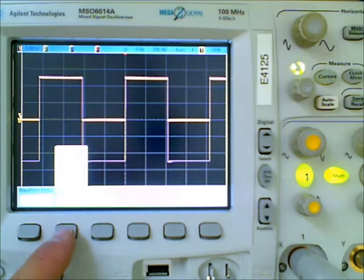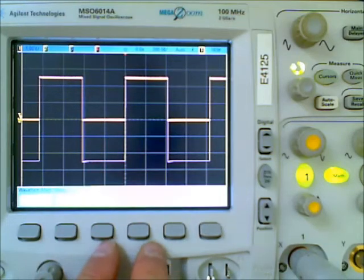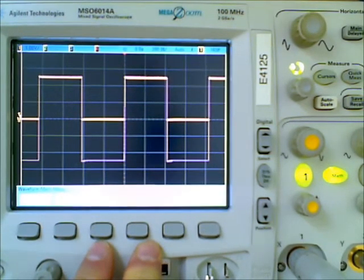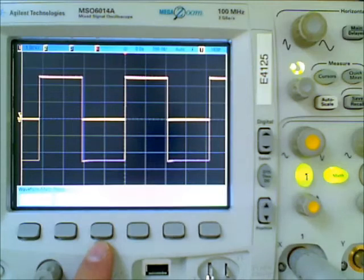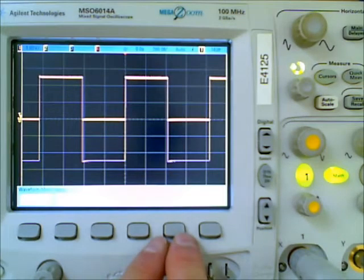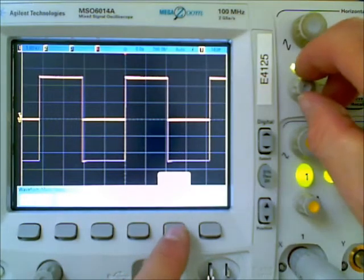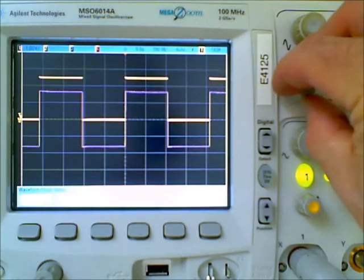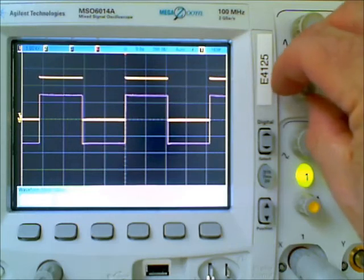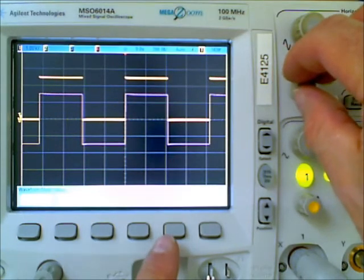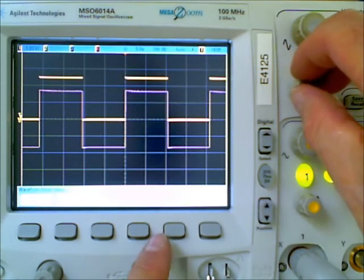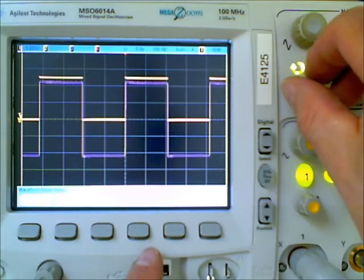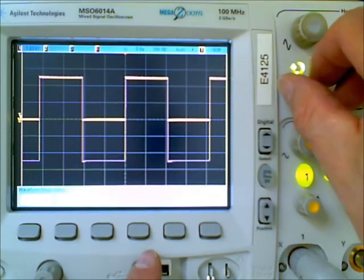And you can select what sources you're working with. Source 1, 2, 3, 4. You can adjust the scale of the output, which is the sum or product or FFT of the waveforms. And let's just set that back to a reasonable value.